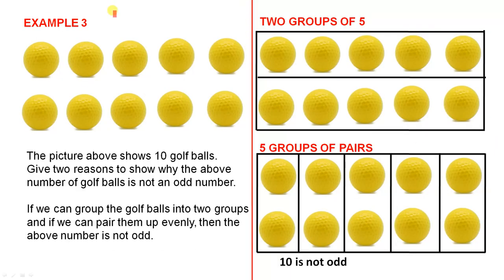Example 3. The picture above shows ten golf balls. Give two reasons to show why the above number of golf balls is not an odd number. So let's not get confused. We have to prove it's not an odd number. If we can group the golf balls into two groups and if we can pair them up evenly, then the above number is not odd.